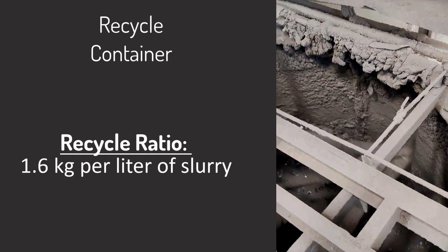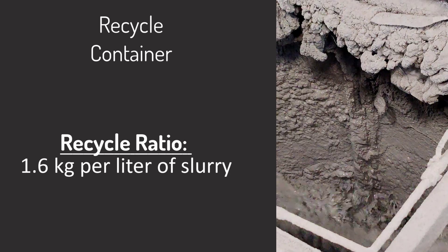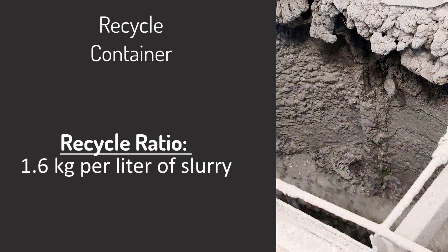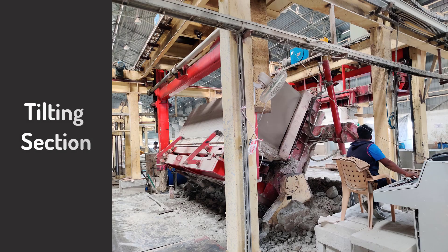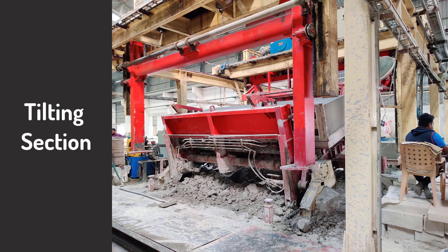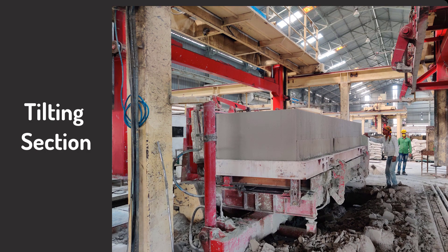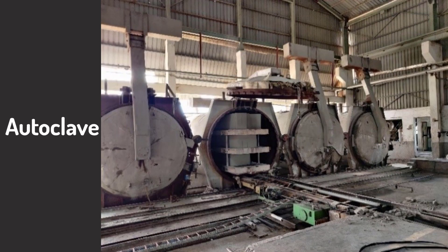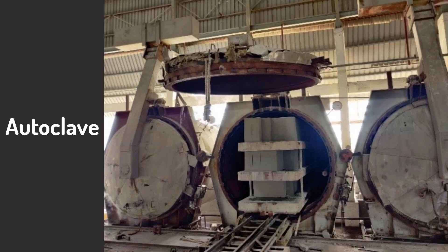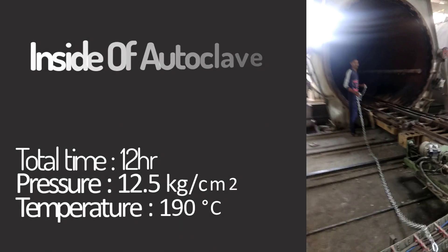This recycled material is then added back to the batching section at a quantity of 1.6 kg per liter of slurry. After cutting, the block is tilted again as before. During the tilting process, some blocks may develop cracks — such blocks are rejected and sent back into the cycle. After final approval, blocks are sent to the autoclaving section. Autoclaving is done to make the block hard enough for use, taking 12 hours for the block to achieve the desired compressive strength.